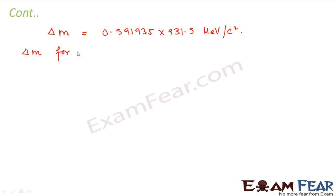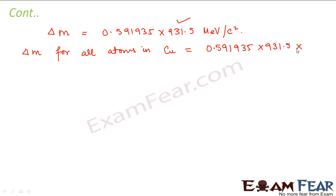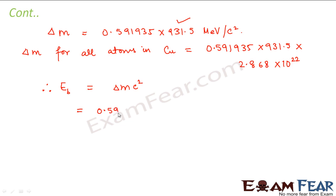Therefore, the mass defect for all atoms in the copper coin would be this value multiplied by the total number of atoms. We just calculated the total number of atoms in 3 grams of copper — that is 2.868 × 10²². So the nuclear energy equals delta-M × c² = 0.591935 × 931.5 × 2.868 × 10²² MeV.